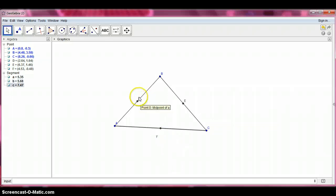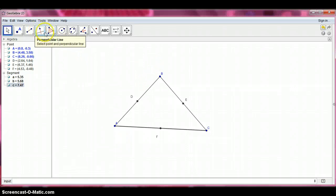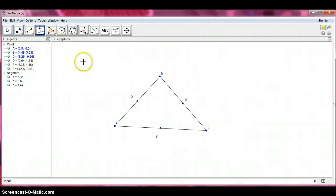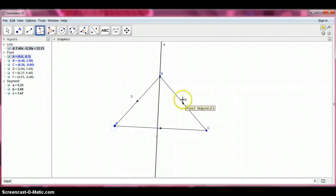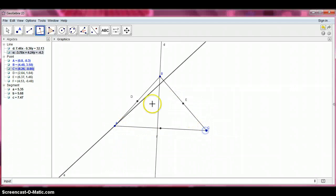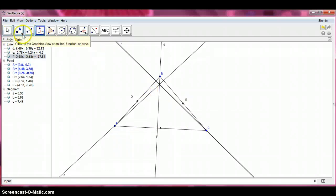And we need to then construct the altitudes of the three vertices. So in order to do that, we need to have our perpendicular line tool selected, click the point and the line across from it, and then where they all intersect.